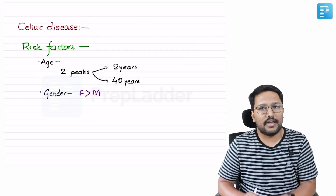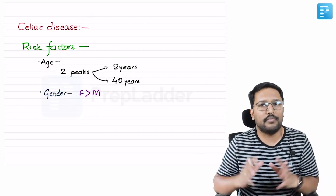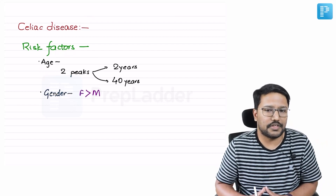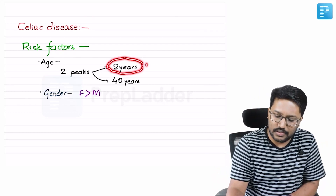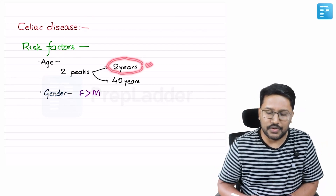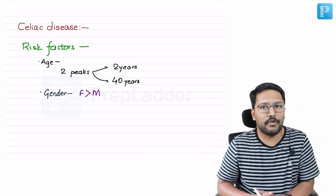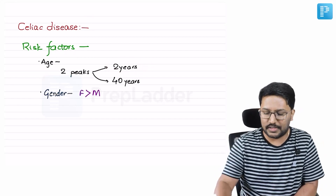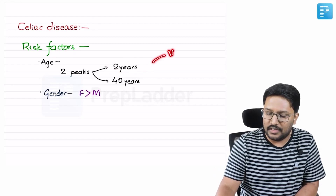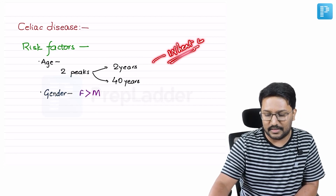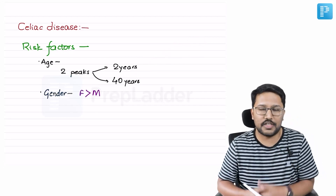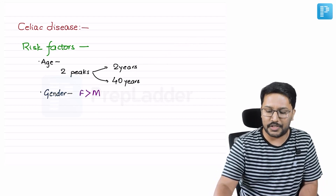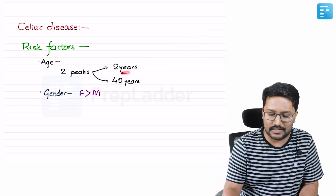There is a bimodal age of presentation. The first peak is usually seen around two years of age or before that — most cases occurring when wheat or other cereals are introduced into the diet, about six months after exclusive breastfeeding when we introduce wheat.